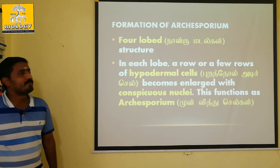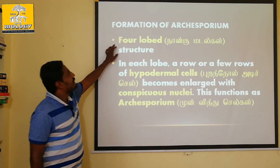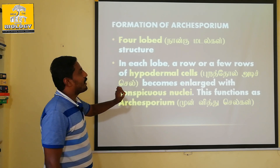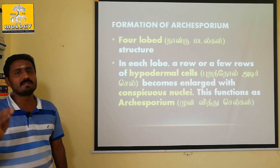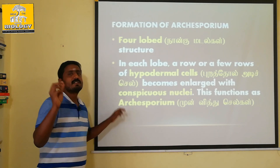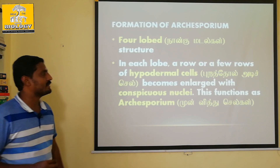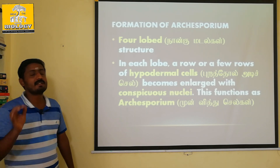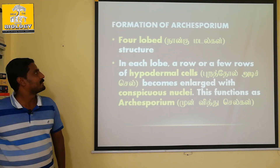Step 2: Four-lobed structures are formed. In each lobe, a row or a few rows of hypodermal cells are formed beneath the epidermis. The cells develop a conspicuous nucleus. This function gives rise to the archesporium.